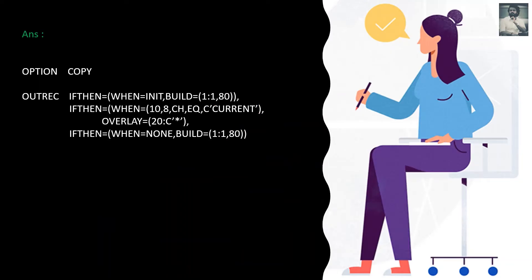Let's see the solution. OPTION COPY will copy the records from input to output as usual. In the OUTREC, we code IFTHEN WHEN — first to copy without conditions. For the actual requirement: IFTHEN WHEN, from position 10, length 8, equal to 'CURRENT' — we need to populate a star (*) at the 20th position using OVERLAY. IFTHEN WHEN NONE — for all other conditions — we build as usual, copying data from position 1 to 80 end to end.